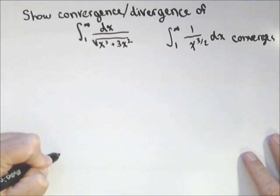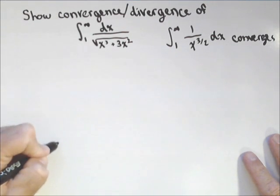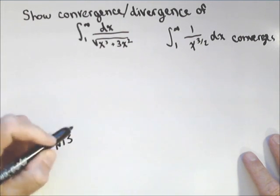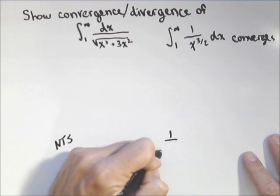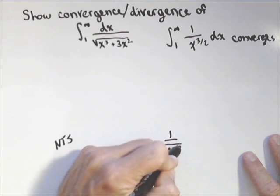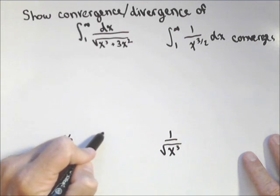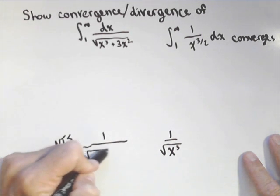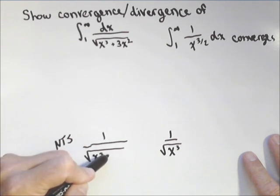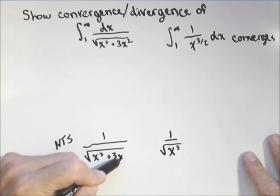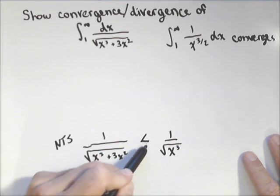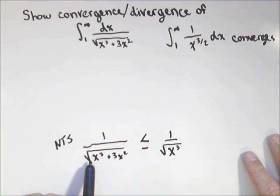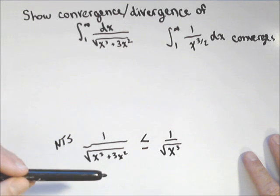And let's, one way to handle these is to start with what you need to show. We need to show, well, we're going to be comparing one over the square root of x cubed with one over the square root of x cubed plus three x squared. And now, because this is convergence, and we're trying to show convergence, we need to show that the one we're testing is less than or equal to, so this is our goal. So what I'm going to do is I'm going to work backwards, which is why I left this space.